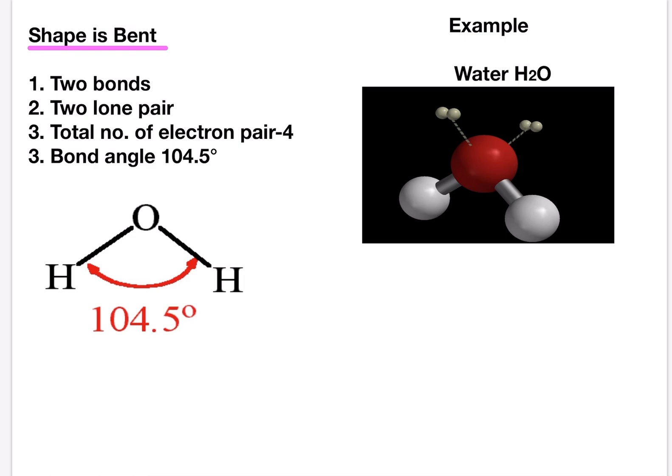Water has two bonding pairs of electrons and two lone pairs and the greatest force is between the two lone pairs. This results in the bonds being pushed even closer together. So the shape of the water molecule is a non-linear V shape and the HOH bond angle is 104.5 degrees.